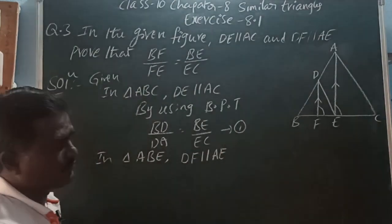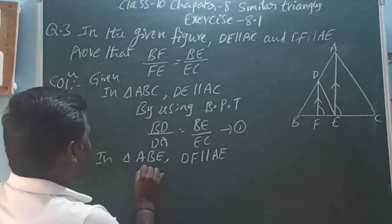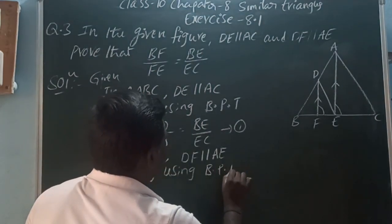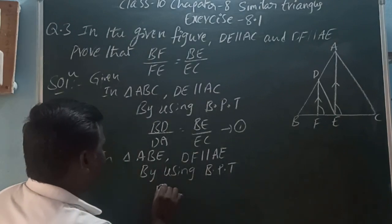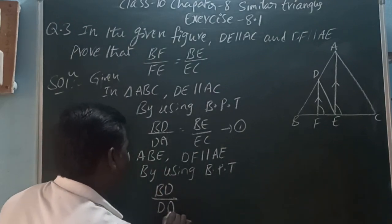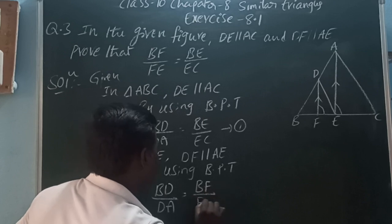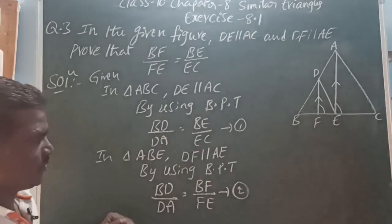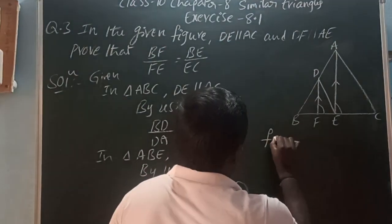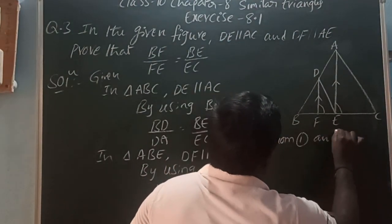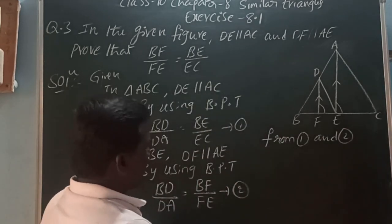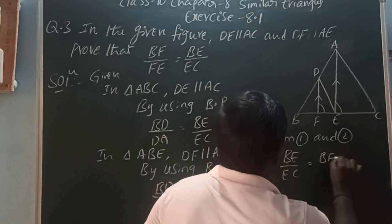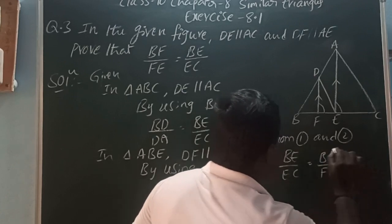Next, in triangle ABE, DF is parallel to AE. So by using BPT, BD/DA is equal to BF/FE. This is equation two. From equations one and two, we can write BE/EC is equal to BF/FE.